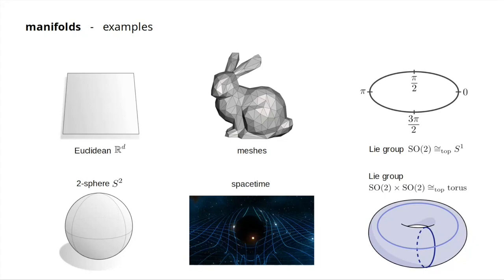For instance, if you have SO(2), the rotation group in two dimensions, you can think about it as having all angles from zero to two pi, and at two pi they connect back together. So topologically, SO(2) looks like a circle, which is a manifold. And the direct product SO(2) times SO(2) is topologically just a torus, which is S1 times S1 — the product of two circles.